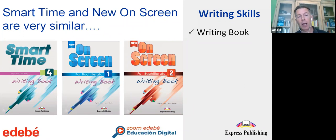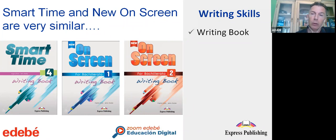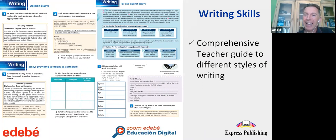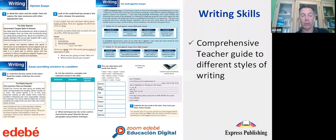Those courses come with a complimentary writing booklet found in the workbook pack, available with the higher levels — Smart Time 4, New On Screen 1, and New On Screen 2. We could refer to it as a bridge between ESO and bachillerato courses. The booklet goes through all the different writing styles with a wide variety of examples, models, and activities offering teachers and students all the tools they will ever need. Examples include opinion essays, for-and-against essays, and essays providing solutions to a problem. The writing skills booklets, thanks to Virginia Evans, have proven to be one of the most popular features of the two books.